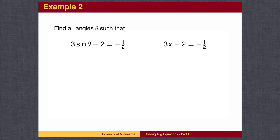To solve 3x minus 2 equals negative 1 half, we would first add 2 to both sides, then divide by 3. In solving our trig equation, we perform the same steps, first adding 2 to both sides, then dividing by 3.